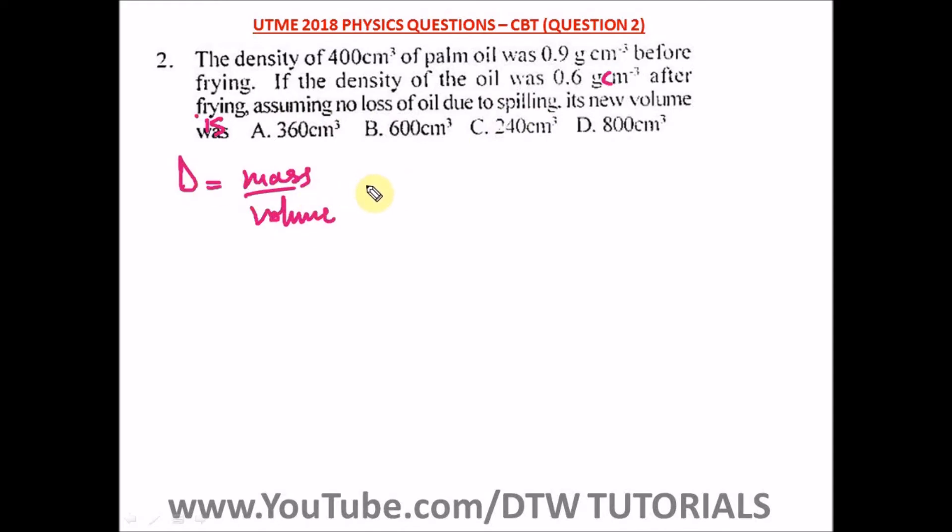So the mass will be the same before frying and also after frying. So we have here, D equals mass over volume. Mass is equal to what? D times volume. That's what, DV.